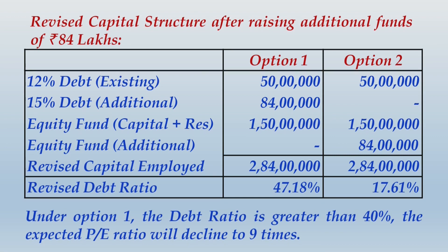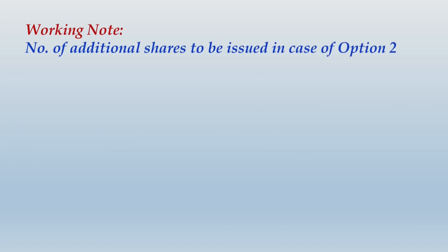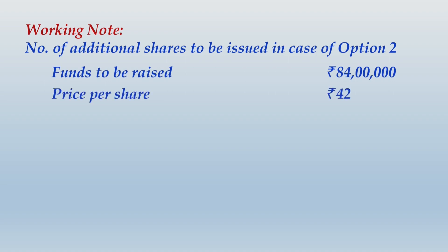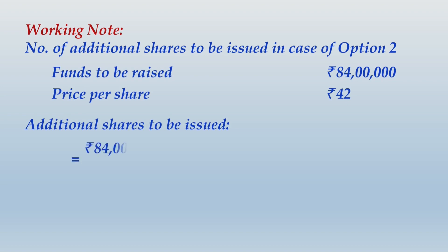Working note: number of additional shares to be issued under Option 2. Funds to be raised: rupees 84 lakhs. Price per share: rupees 42. Additional shares = 84 lakhs ÷ 42 = 2 lakh shares.